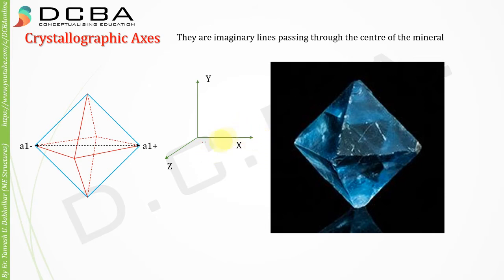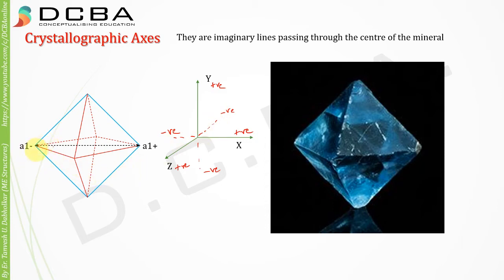We have three axes: x, y, and z. To the right of x is positive, left of x is negative. Above is positive, downwards is negative. For the z-axis, towards the observer is positive and away from the observer is negative. So in the x direction I named it a1 minus and a1 plus, in the z direction a2 plus and a2 minus, and in the y direction a3 plus and a3 minus.